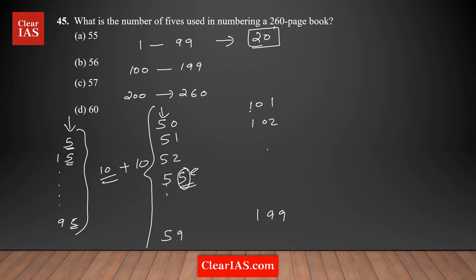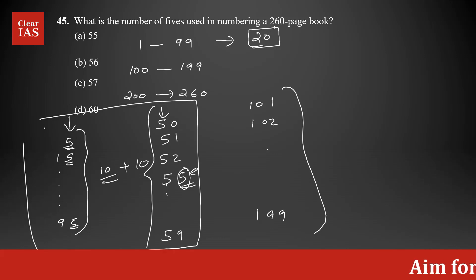This is going to be equal to the same we have done before. The number of 5s from 1 to 99 is going to be same as from 100 to 199, so it's going to be again 20 here.